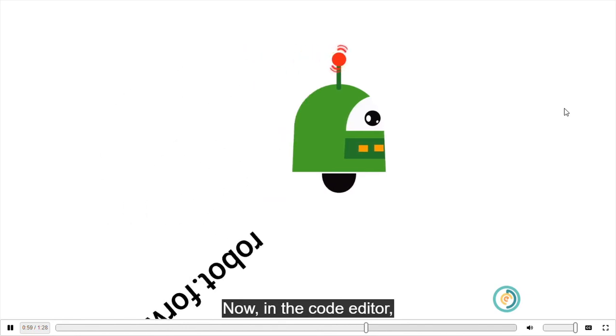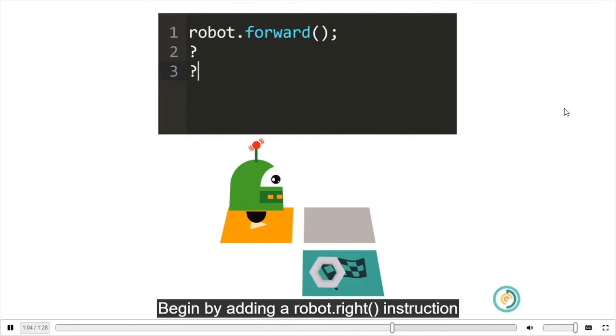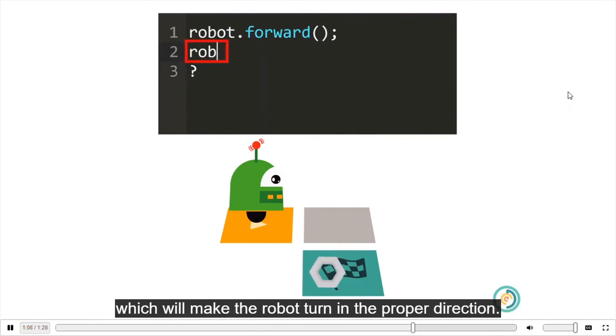Now, in the code editor, code the path that will enable the robot to get to his goal. Begin by adding a robot.right instruction which will make the robot turn in the proper direction.